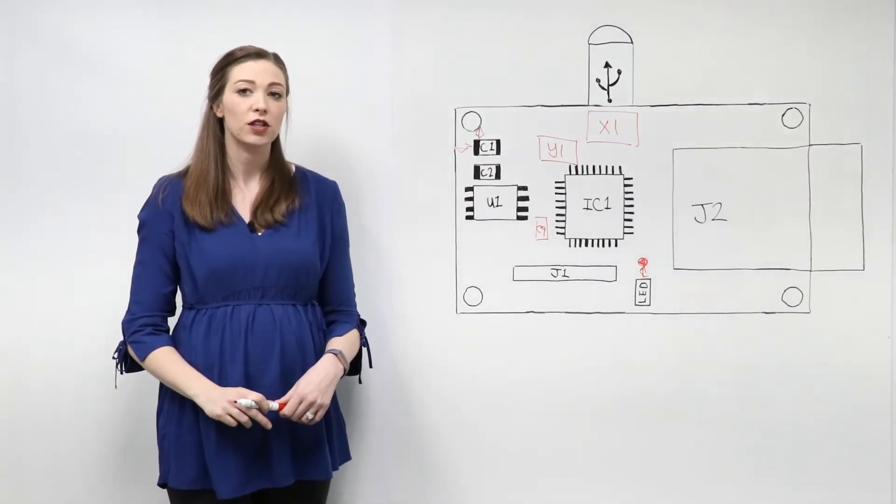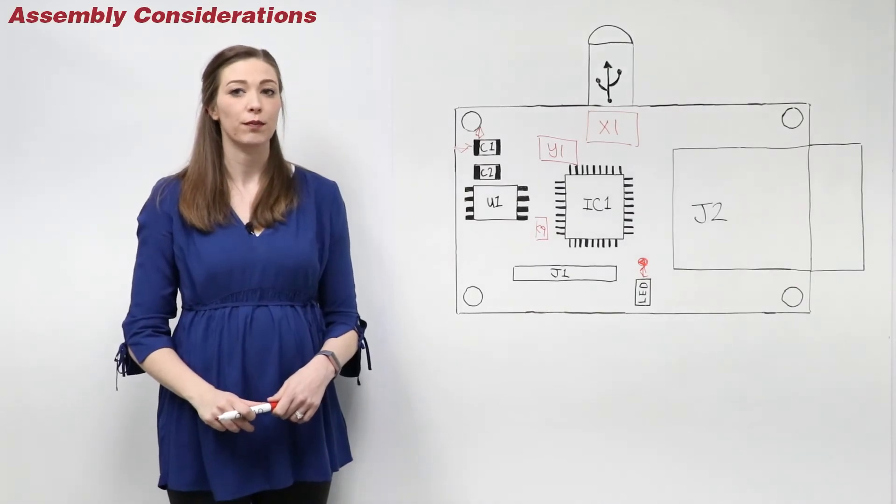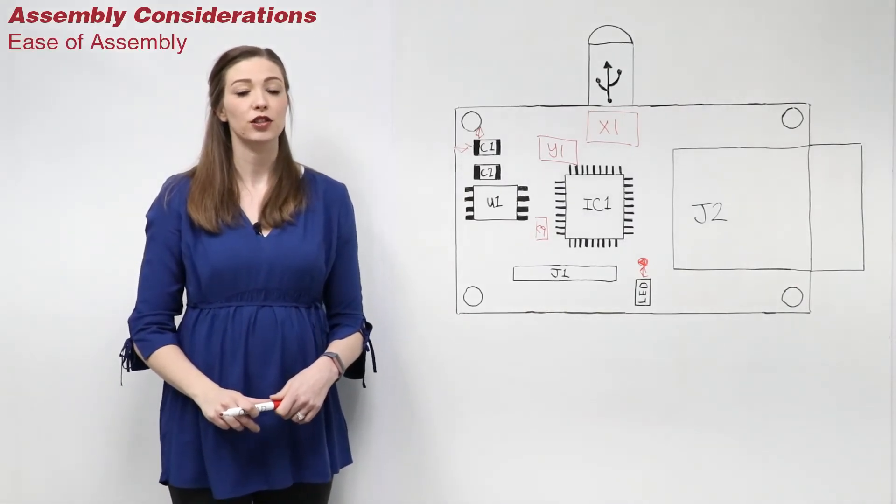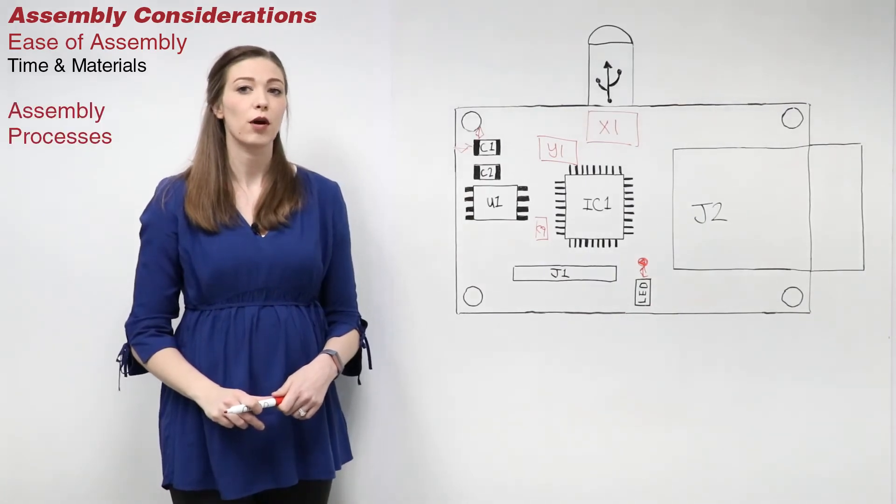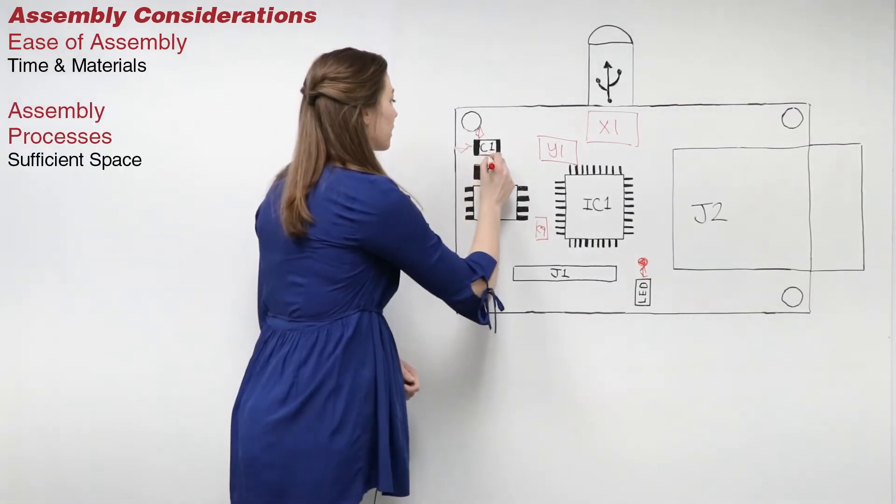When placing components, you must also consider the ease of assembly. Ease of assembly is measured in time and materials. Make sure there is enough room between components for wave solderability and other assembly processes.